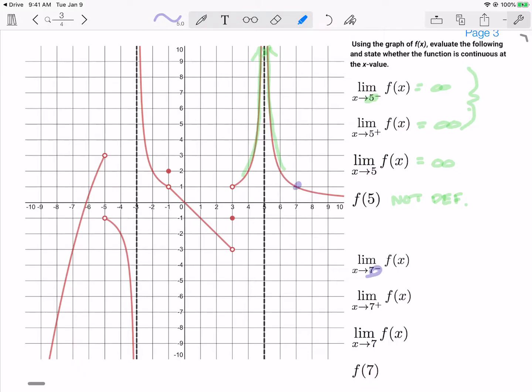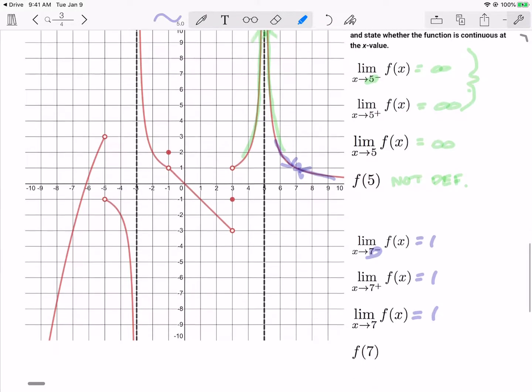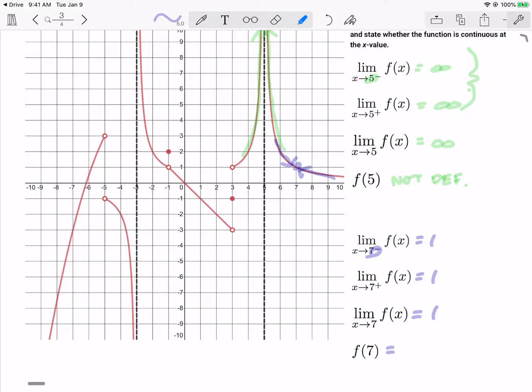Now we go on to x approaching 7. This is our boring case, it's completely filled in. As we come from the left, as we come from the right, we approach a y value of 1. Therefore, our limit equals 1, and the function is filled in, there's no holes there, it is equal to 1. So because all of these values are the same, in particular these two, we can say that the function is continuous.